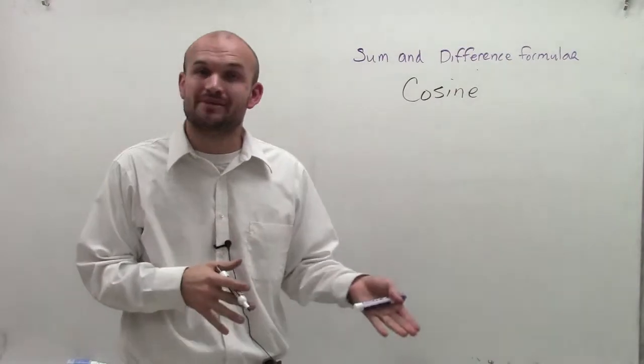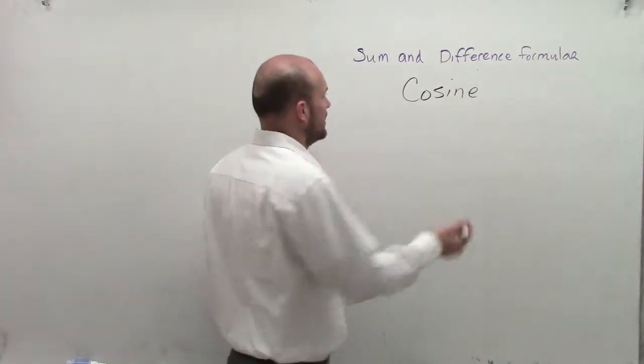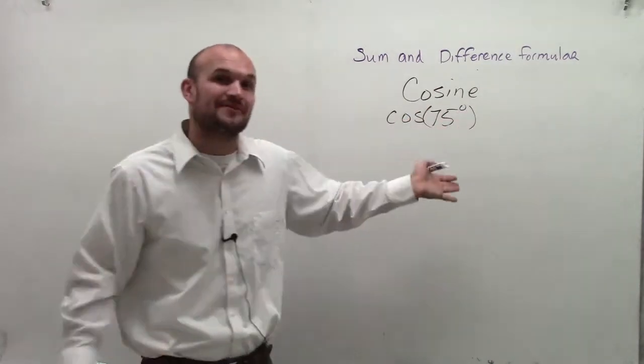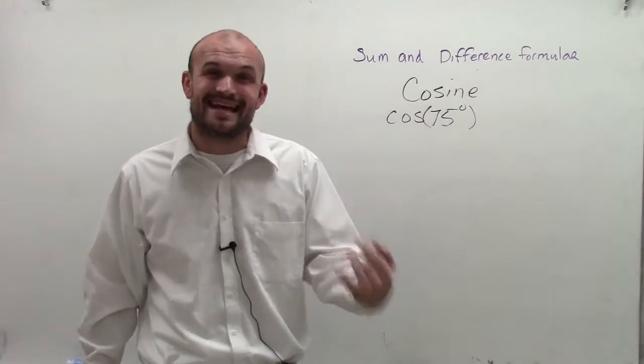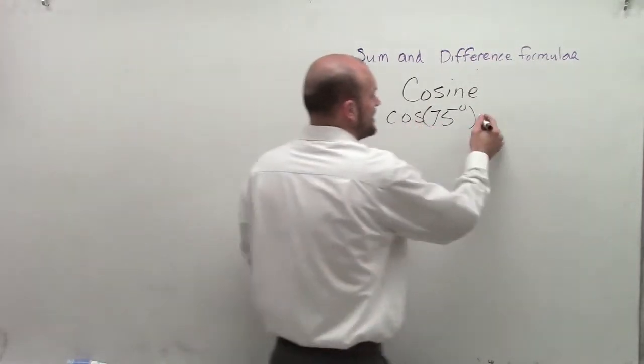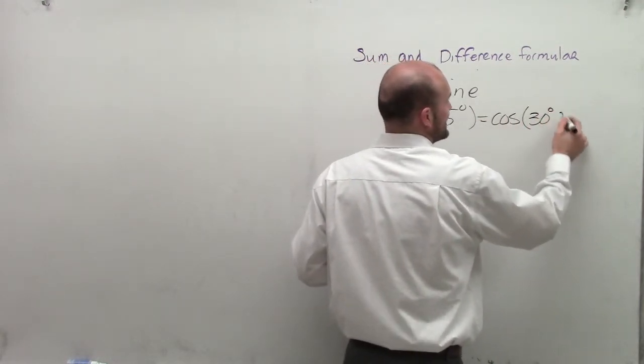Just like the sine sum and difference formulas, when we have an angle that we cannot evaluate for—I keep using 75 degrees, it's just easy—if I have an angle like 75 degrees that I can't get the exact answer for because it's not on my unit circle, I can break it down into the cosine of two smaller angles that I can evaluate for.